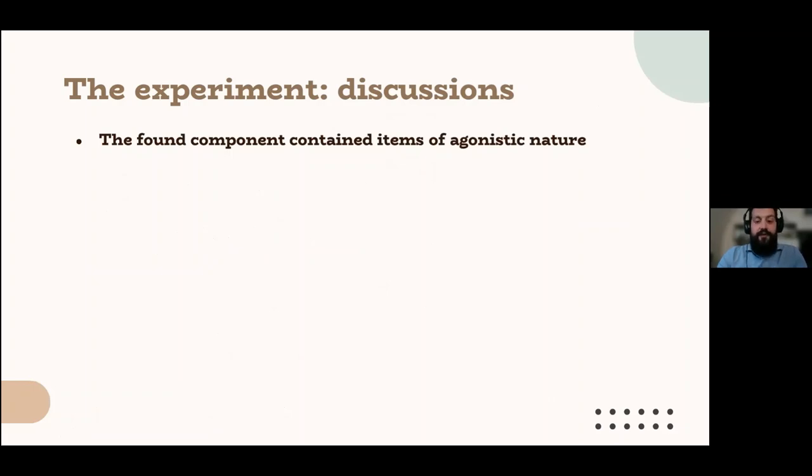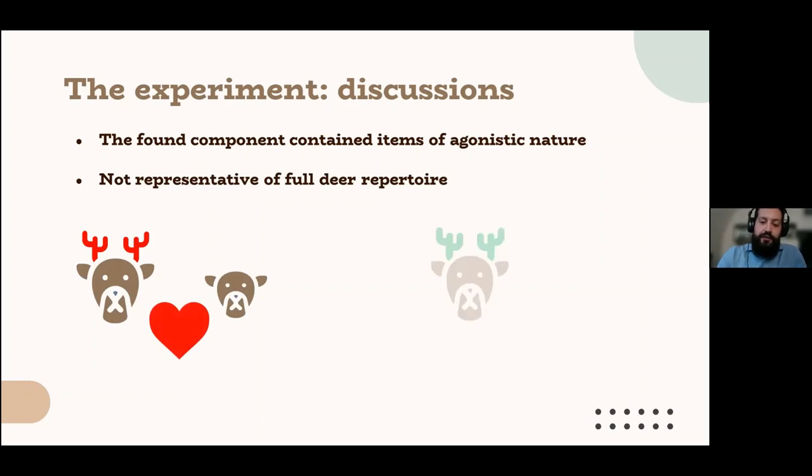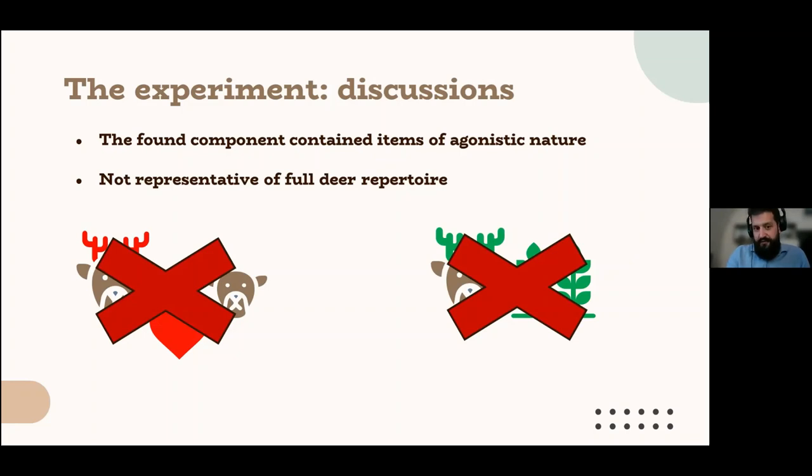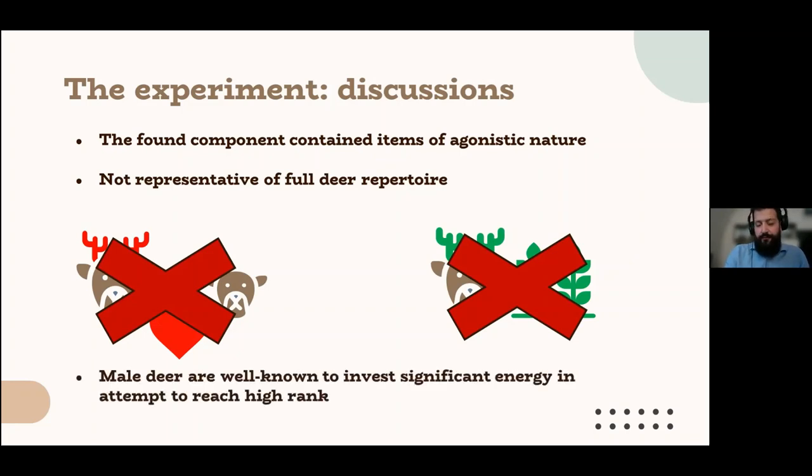So, probably a modification of the questionnaire and a bigger sample would have made us a little bit happier. Anyway, the found component contained items of agonistic nature, which of course are not representative of the full deer repertoire, but it's also true that we did not observe the full deer repertoire because we did not take into account the mate choice and the feeding preferences. So for what we actually focused on, this component makes sense, because male deer are well known to invest significant energy in an attempt to reach a higher rank, and the component we found, that confidence aggressiveness, is in line with other studies, both on other species, the fallow deer for example, and on other different groups.